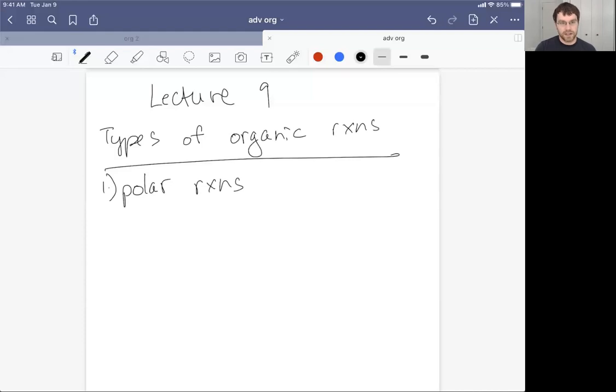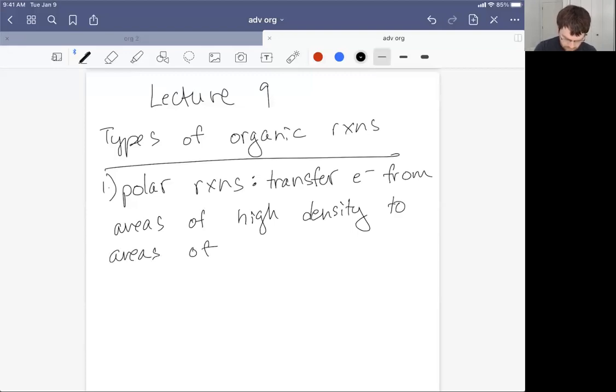In polar reactions, if we had to define these things, we're going to transfer electrons from areas of high density to areas of low density. There's a few words that come to mind when we think about polar reactions, and those are nucleophiles and electrophiles. Areas of high density, that would be our nucleophile.